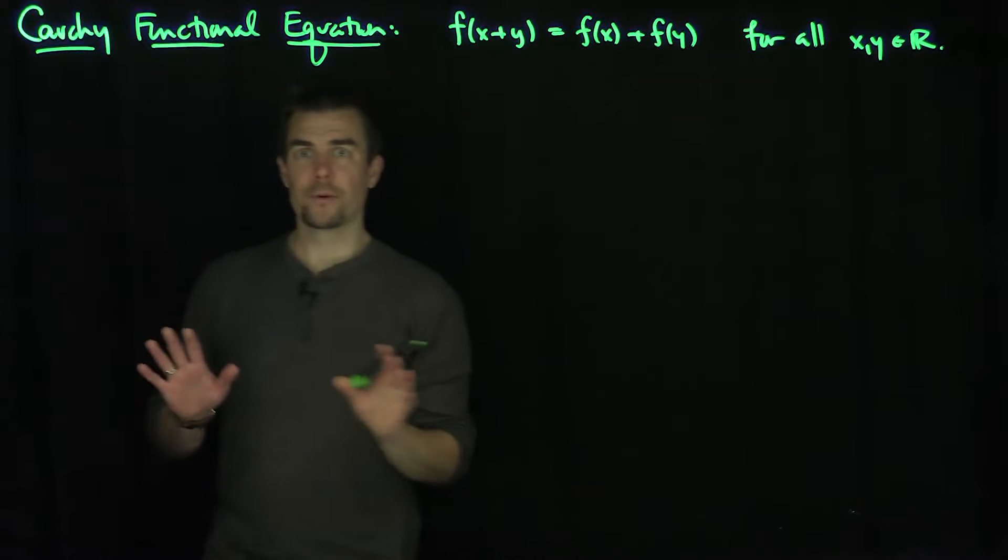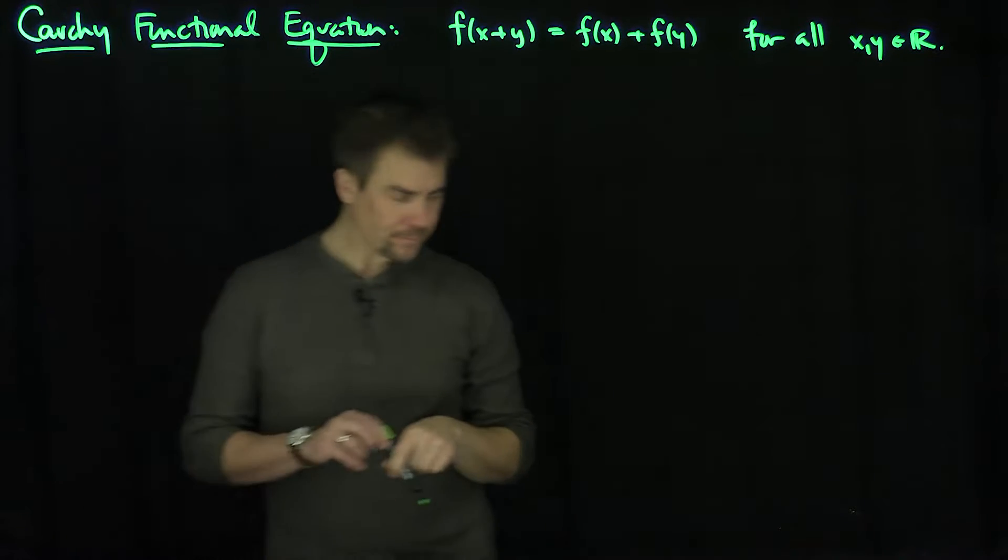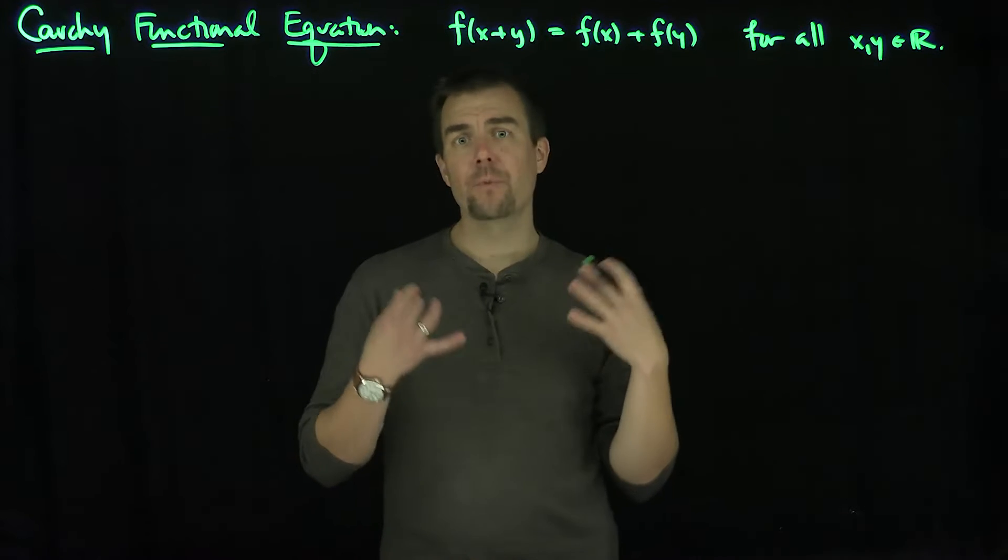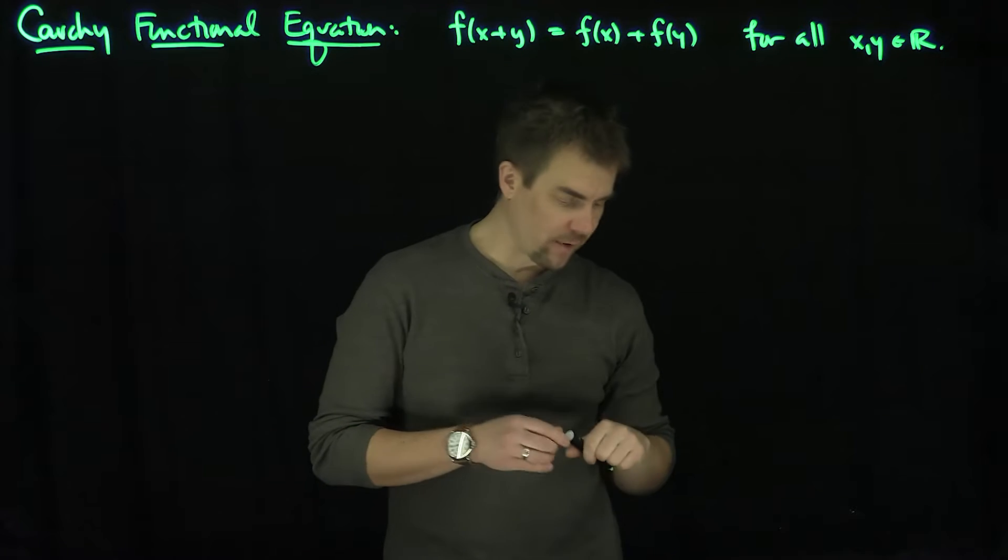So we have this functional relationship for any points x and y on the real line. What I want to do is study this functional equation to see what kind of properties it gives to the function f.